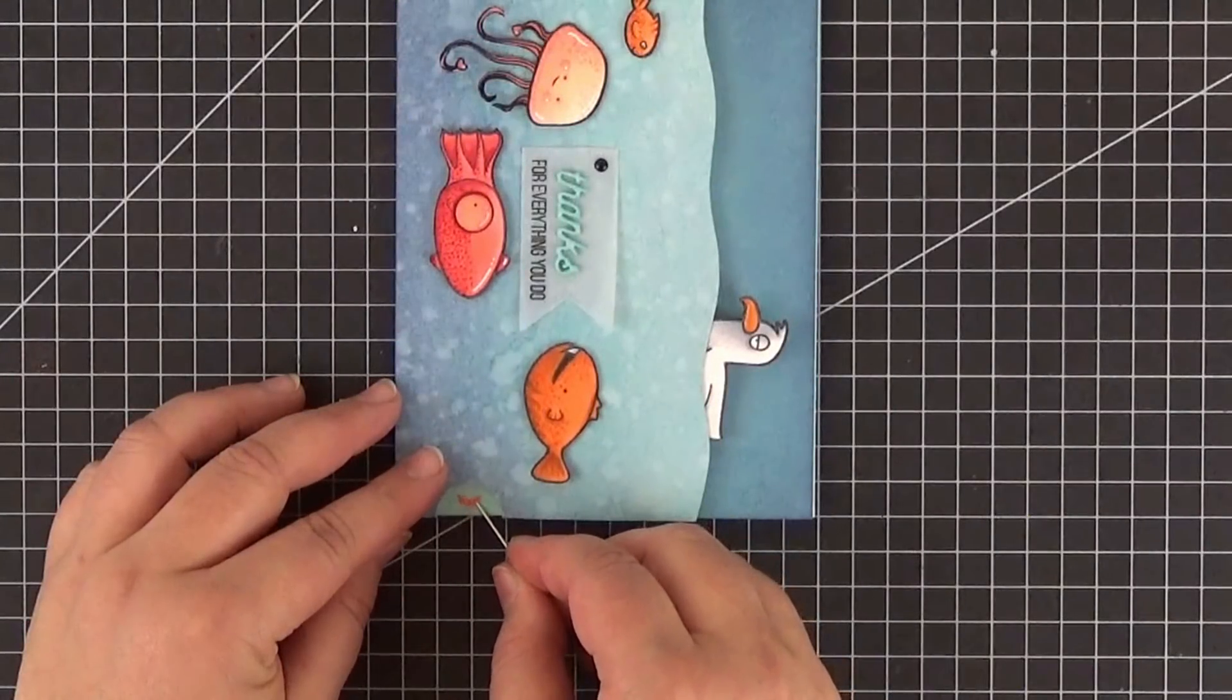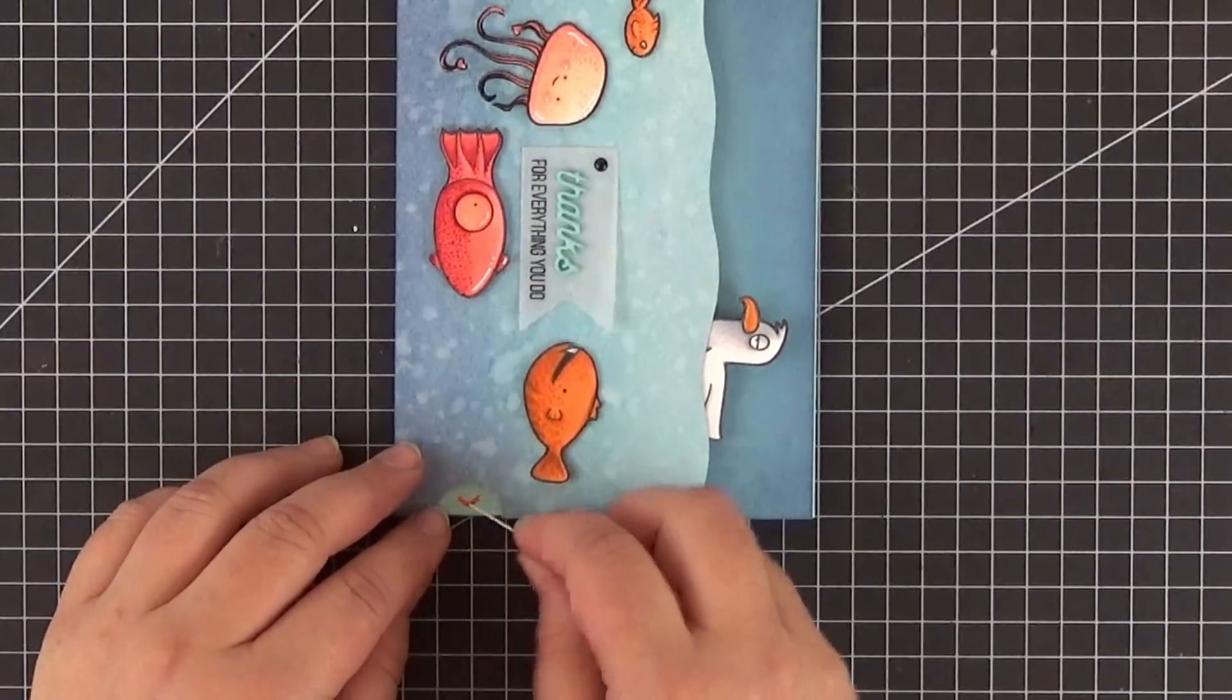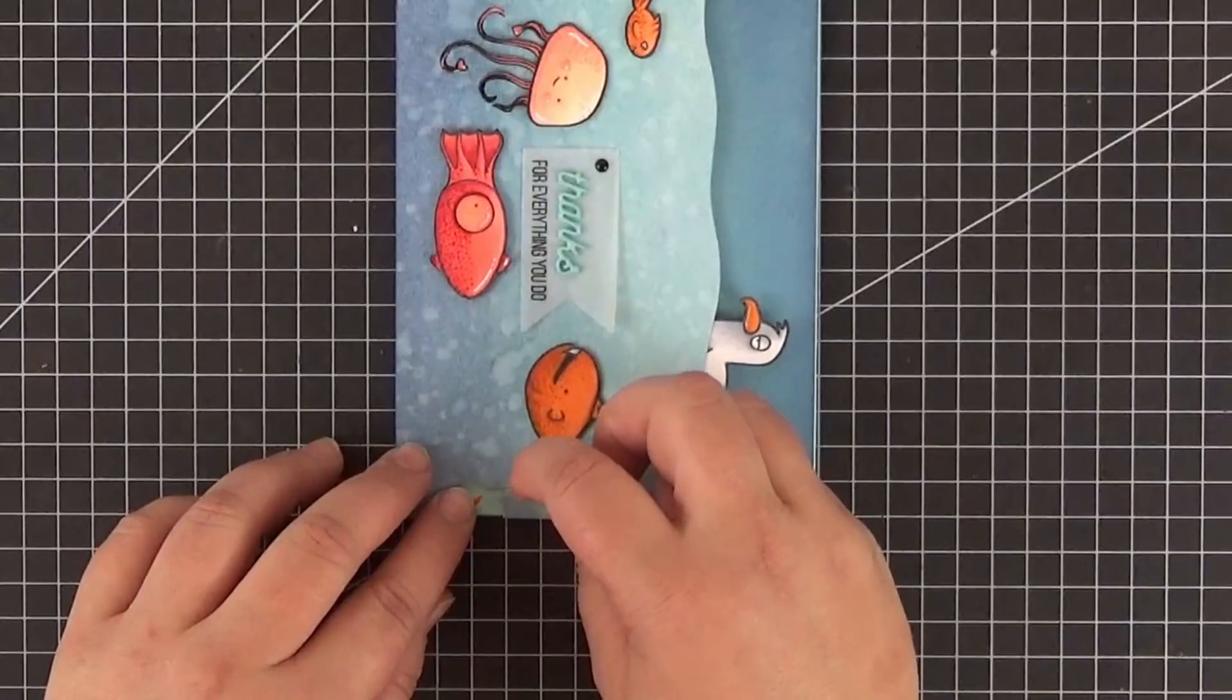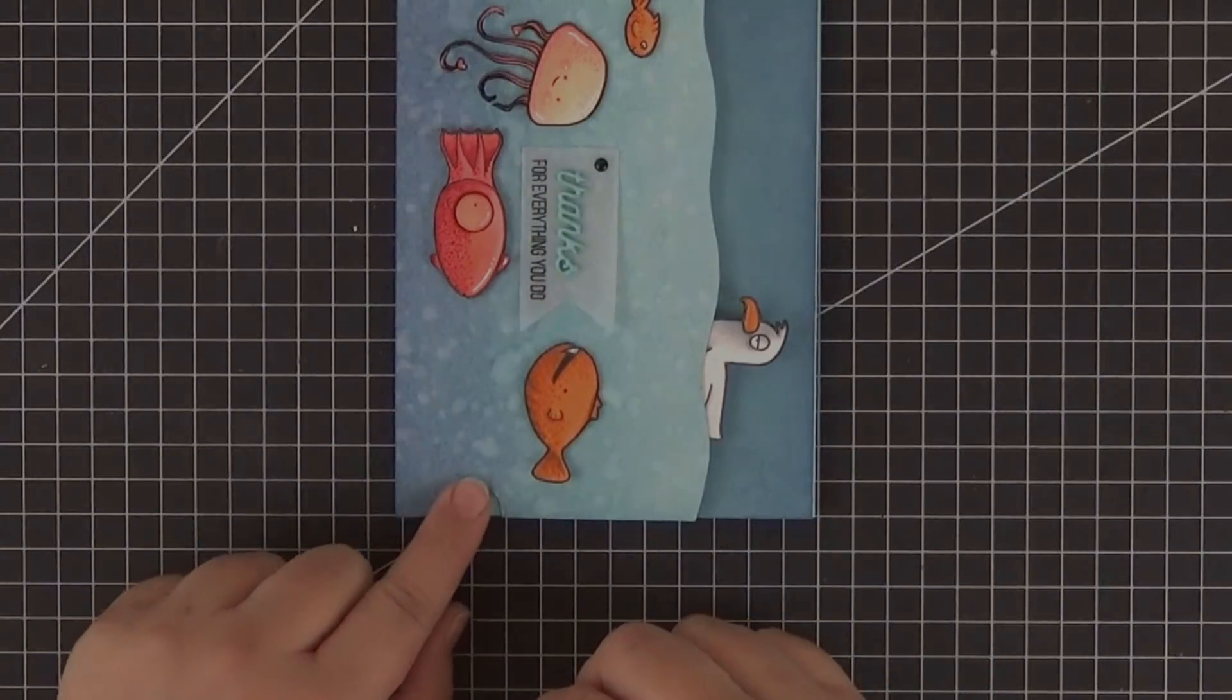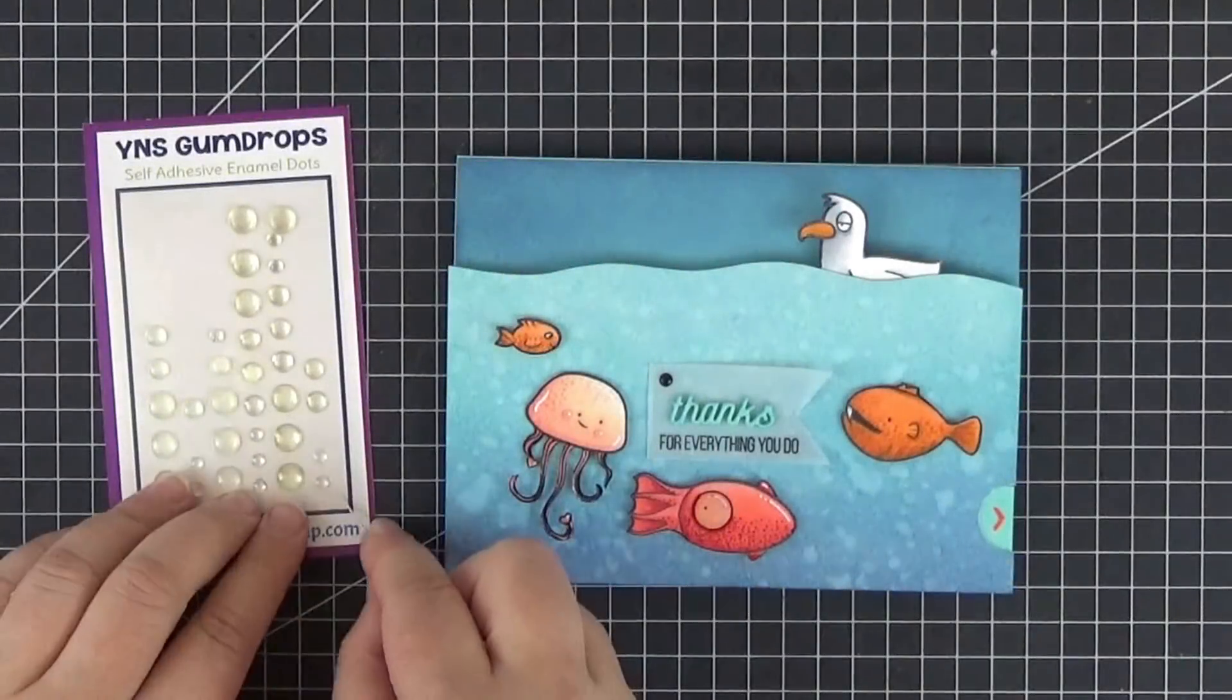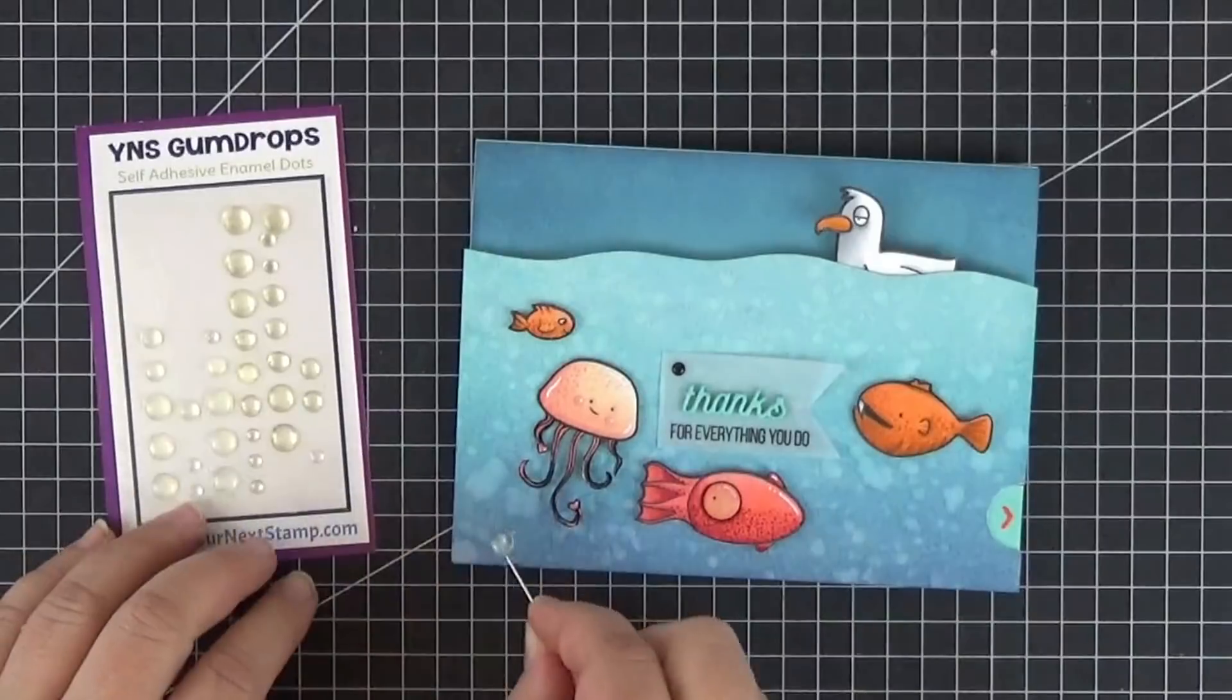Here I've already added a vellum banner with the sentiment and a small fish, and I'm adhering an orange enamel arrow to the pull tab. I like these self-adhesive clear enamel dots, but you could also make your own with glossy accents.